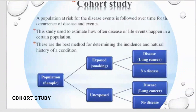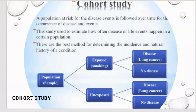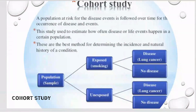For example, we take a population and divide them into those who were exposed to smoking and those who were not. Within each of those two groups, we further divide into people who have lung cancer and people who do not. By studying and dividing the cohort this way, we are essentially studying groups — and that is what a cohort study is.